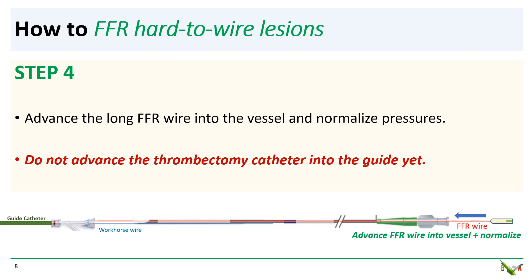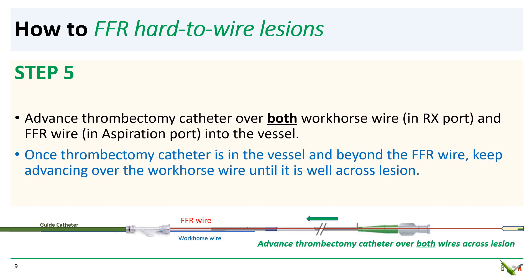Again, at this point keep the thrombectomy catheter outside the guide. Step five: after you've normalized the pressures, you then advance the thrombectomy catheter into the vessel over both the workhorse wire and the FFR wire.